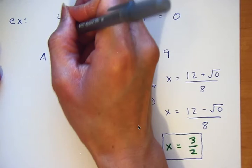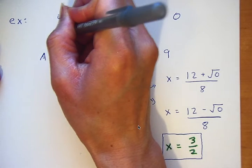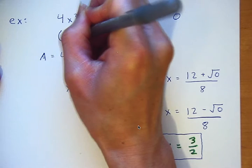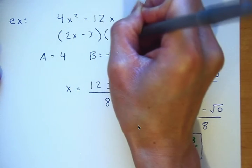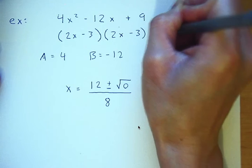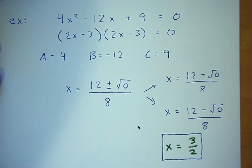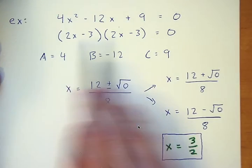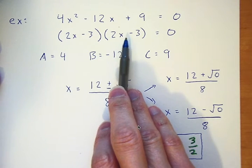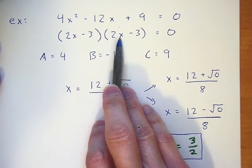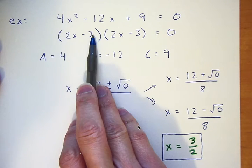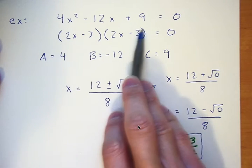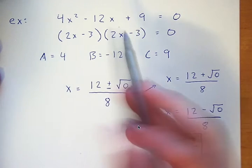If I factored this equation, I get 2x minus 3 times 2x minus 3 equals zero. Looking at the factored form, you can tell there's only going to be one unique solution, since solving 2x minus 3 equals zero twice gives the same result.